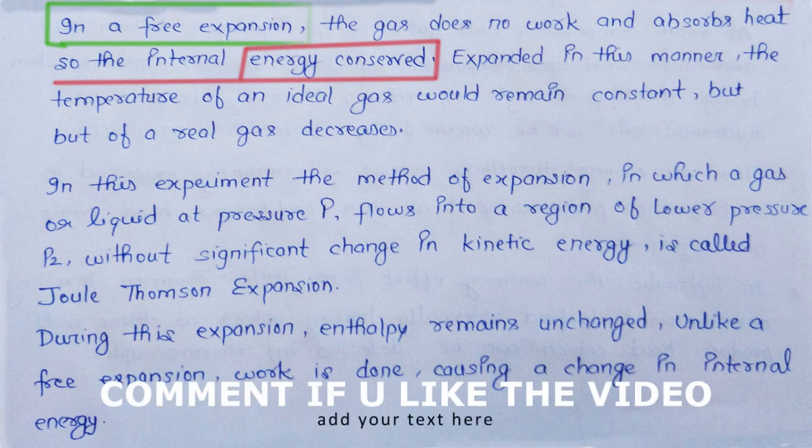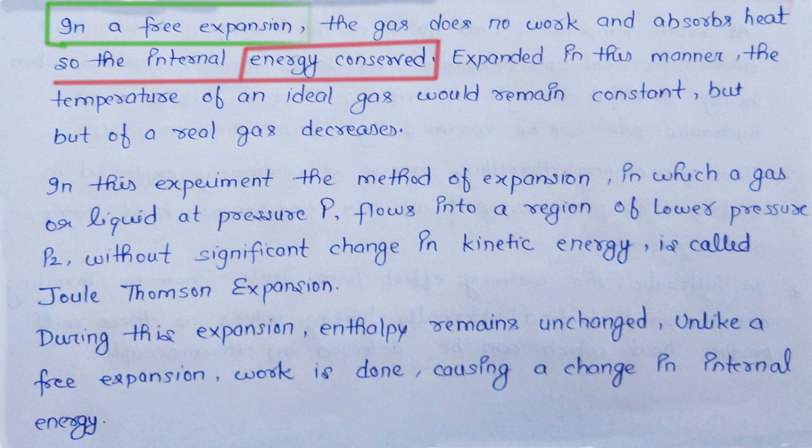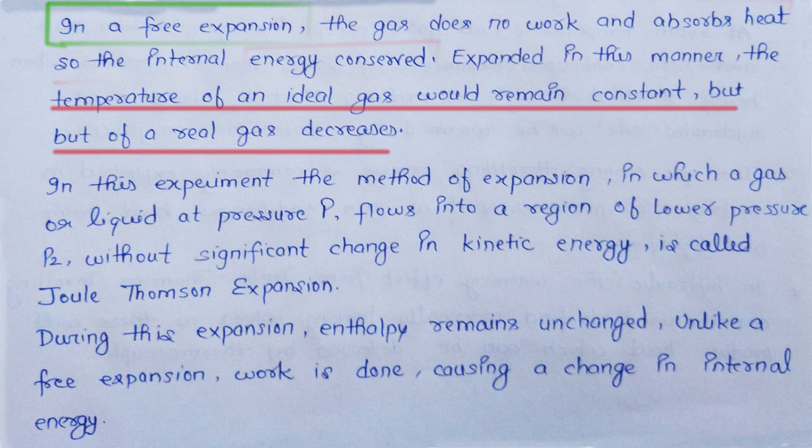Expansions can be carried out in the following different methods. Number one: free expansion — gas does not do work and doesn't absorb heat, so the internal energy is conserved। यानी gas काम नहीं करती system पर, या system gas पर काम नहीं करता; उस समय heat absorb नहीं होती, इस वजह से internal energy conserved रहती है। Expanded in this manner, the temperature of an ideal gas would remain constant।